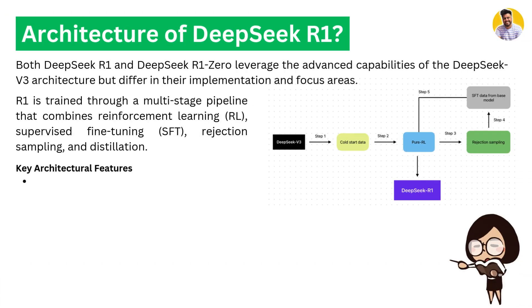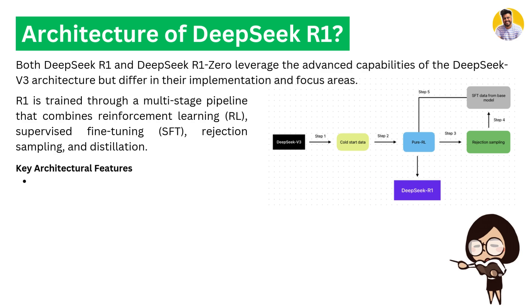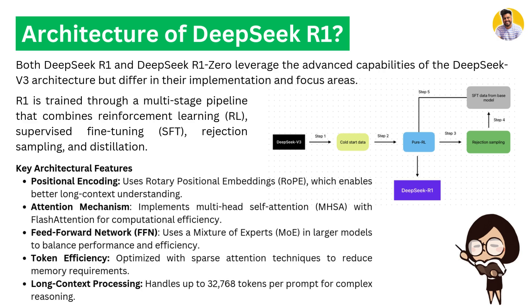Both DeepSeek R1 and DeepSeek R1-Zero leverage the advanced capabilities of DeepSeek V3 but differ in their implementation, training, and focus areas. R1 is trained through a multi-stage pipeline that combines reinforcement learning, supervised fine-tuning, rejection sampling, and distillation.